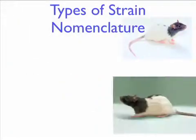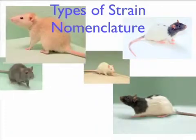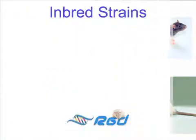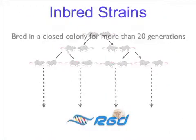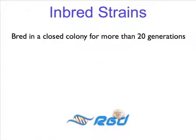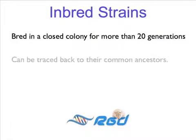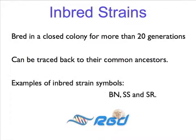Here are a few examples of strain nomenclature. Inbred strains are bred in an enclosed colony for more than 20 generations. They can be traced back to their common ancestors. Some examples of inbred strains are BN, SS, and SR.